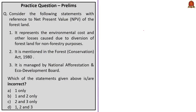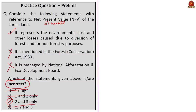Next question: Consider the following statements regarding the net present value of forest land. Statement 1: It represents the environmental cost and other losses caused due to diversion of forest land for non-forestry purposes. Statement 1 is correct, so it should not appear among incorrect statements. Statement 2: It is mentioned in the Forest Act of 1980 — this is incorrect, as NPV is mandated by the Supreme Court, not the Forest Act. Statement 3: It is managed by the National Afforestation and Eco Development Board — this is incorrect; NPV, compensatory afforestation fee, and other fees are managed by the Compensatory Afforestation Fund Management and Planning Authority (CAMPA). The correct answer is option C — 2 and 3 only.